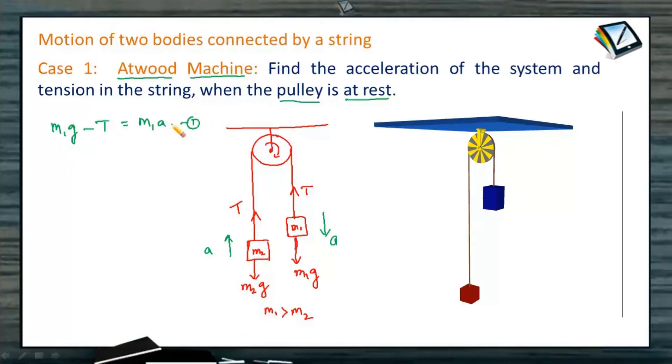since body is moving down, minus T is equal to M1A. This is our equation 1. For the second body, T minus M2g is equal to M2A. This is equation number 2. Solving these two equations, adding. We get M1 minus M2 times g is equal to M1 plus M2 times A.